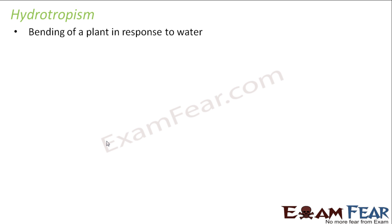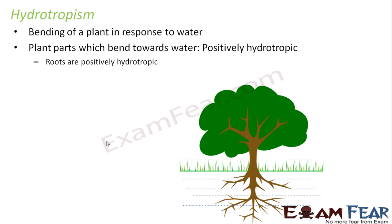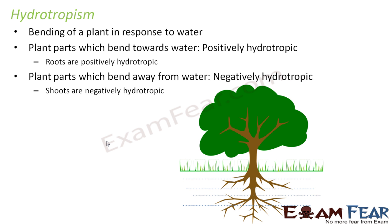The third tropic movement is hydrotropism — the bending of a plant in response to water. Plant parts which bend towards water are positively hydrotropic. Since soil contains water, roots grow towards the soil and are therefore positively hydrotropic. Whereas plant parts which bend away from water are negatively hydrotropic — shoots move away from the soil, so they are negatively hydrotropic.